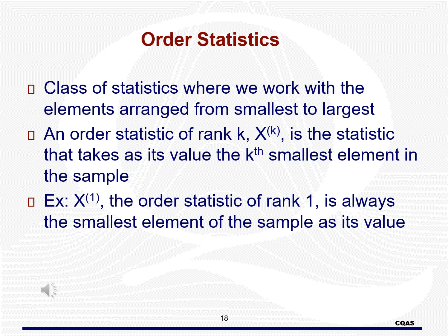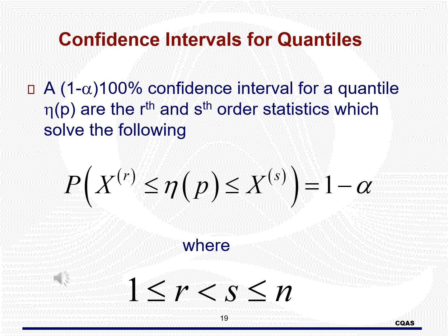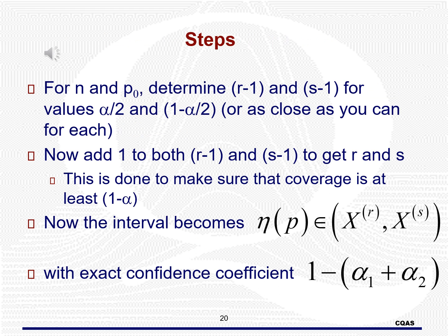For quantiles, the confidence interval is the set of order statistics that make the probability statement true. Note that r is less than s, and both need to be between 1 and n inclusive. To find the values: first determine r1 and s1 for alpha1 equals alpha2 equals alpha/2 if possible. Then add 1 to those two numbers to get r and s. Find the confidence limits as the rth and sth order statistics. The coverage would be 1 minus (alpha1 plus alpha2), and we want this to be at least 1 minus alpha.